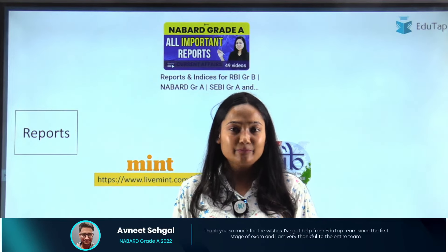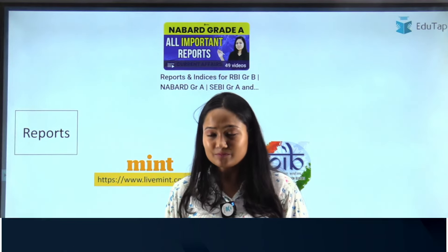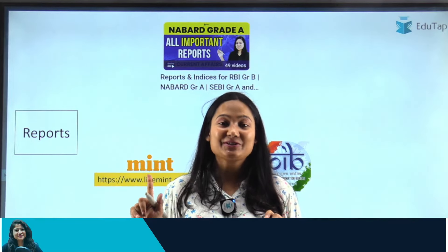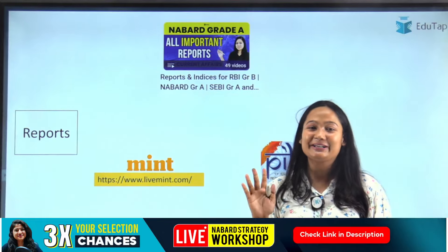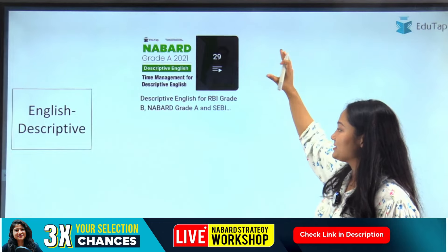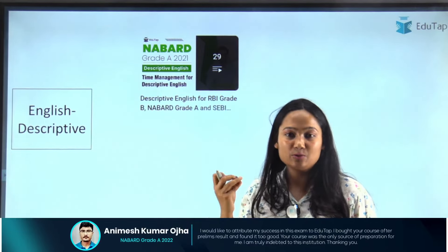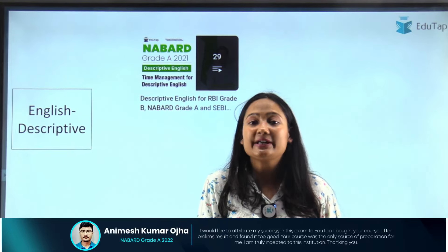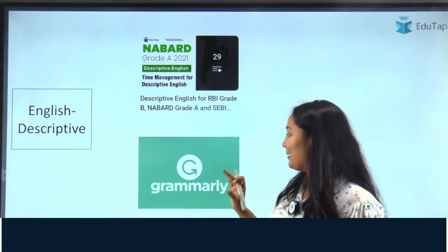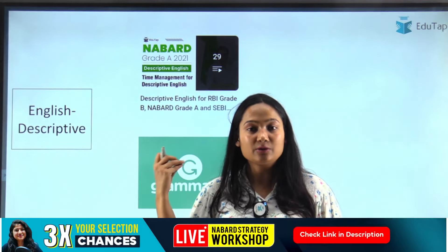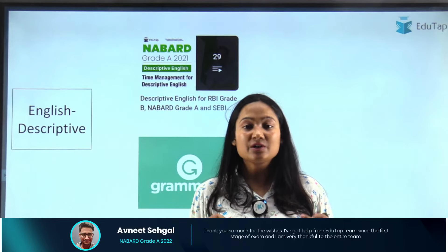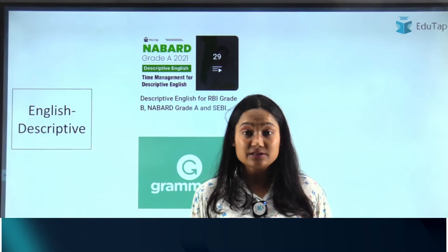If you want to prepare for this year's examination, the best strategy for Reports would be to attend the upcoming Sunday session on ARD Reports and ARD Current Affairs — a complete ARD strategy session. One topic that was remaining is Descriptive English. For Descriptive English, first understand the technicalities and get examples from EduTap's Descriptive English series for RBI, NABARD, and SEBI — this will teach you how to write an essay, what to include, and what not to include. Once you write answers, use Grammarly — either as a browser extension or by typing directly on the Grammarly website — to identify all your mistakes.